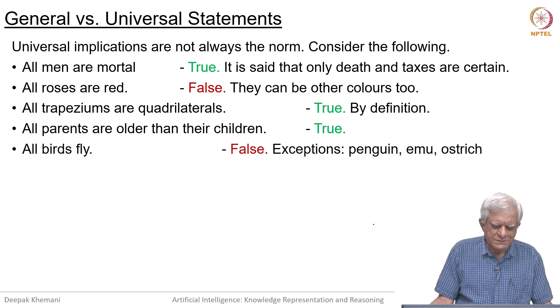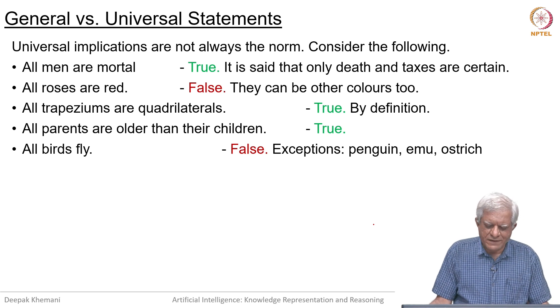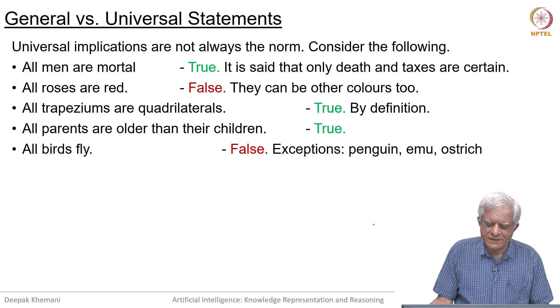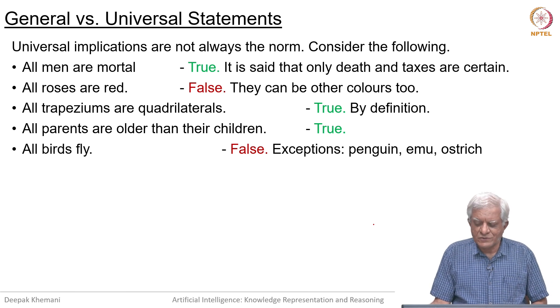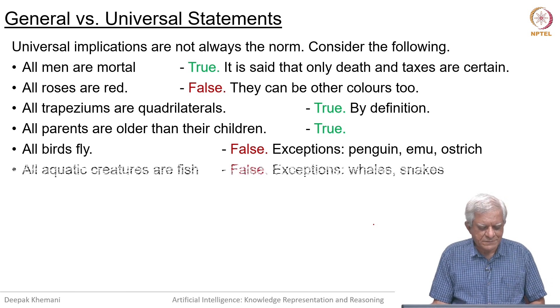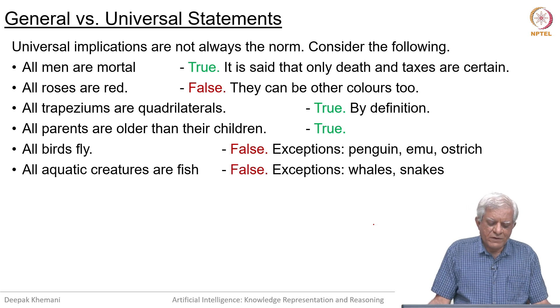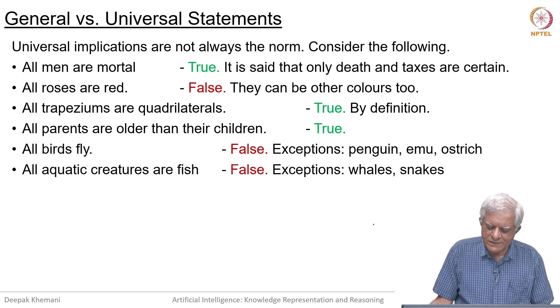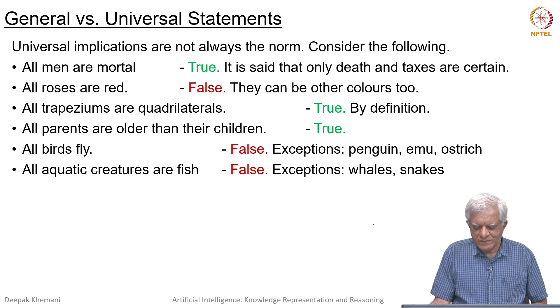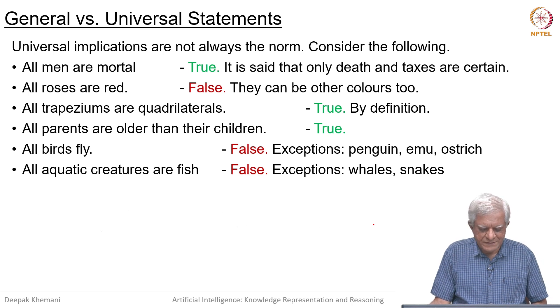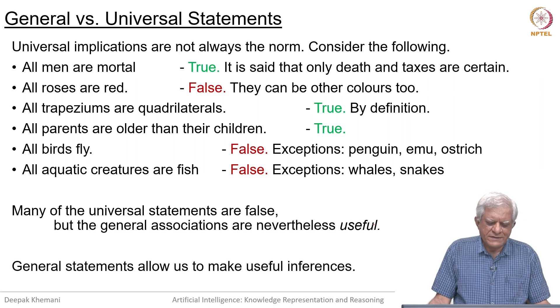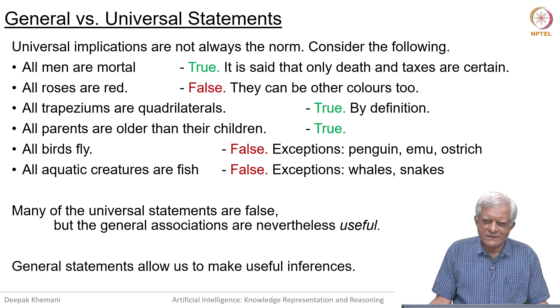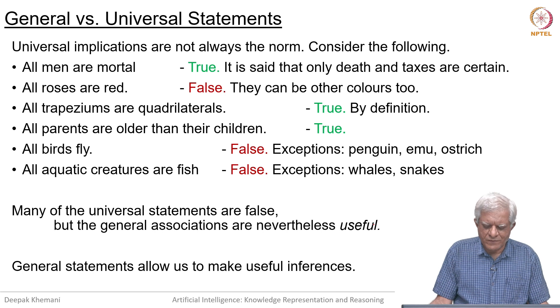Some things are universally true, but if you say all birds fly, and that is our favorite example, that is false because there are exceptions like penguins and emus and ostriches. All aquatic creatures are fish, that is also false because we have whales which are not fish for example, and snakes. If you were to express knowledge as universals, then some of them would turn out to be false essentially.